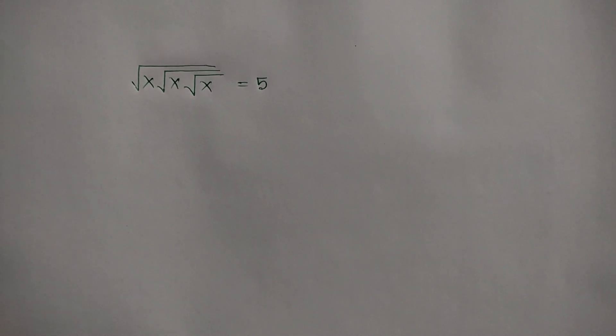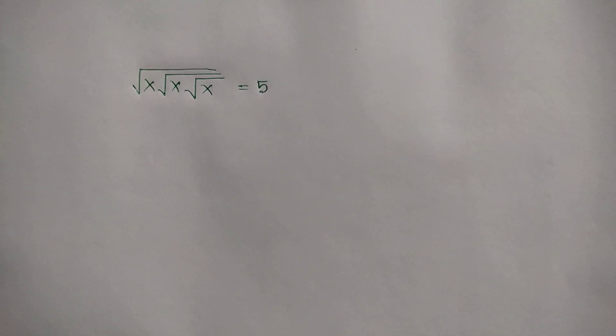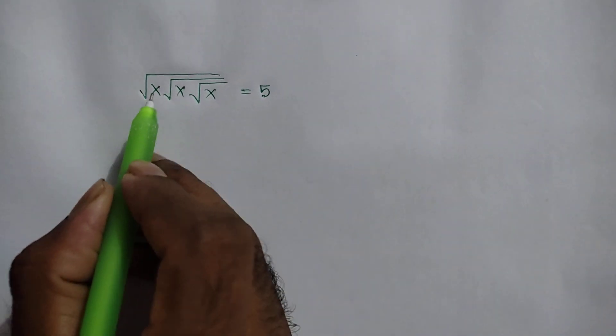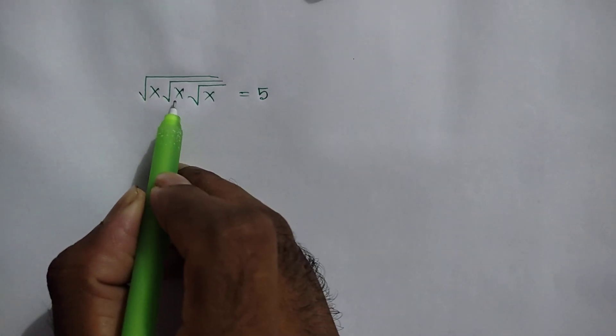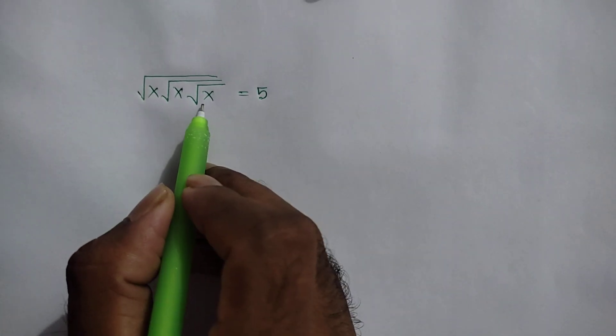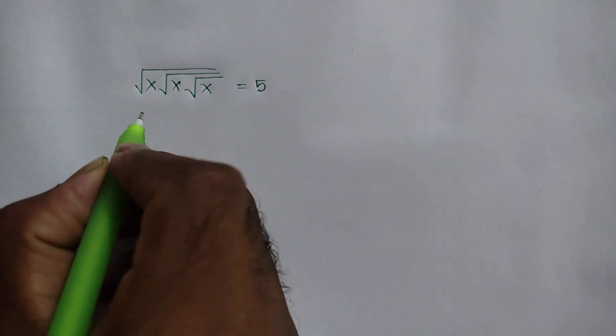Hi everyone. In this video I am going to show how to find the value of x where square root of x times square root of x times square root of x is equal to 5.